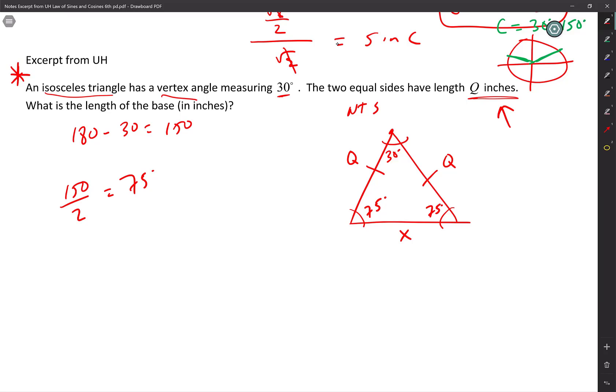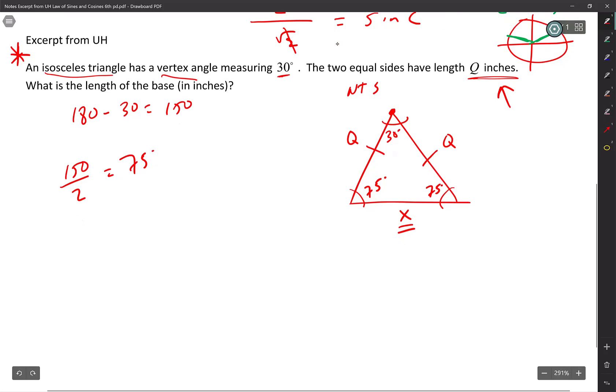So check it out. I'm going to use law of cosines. I have the 30 degrees. It's a vertex, and I'm trying to figure out what X is. So law of cosines is X squared equals Q squared plus Q squared minus 2 times Q times Q cosine of 30 degrees.